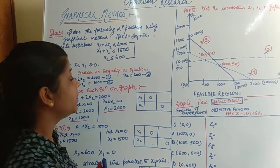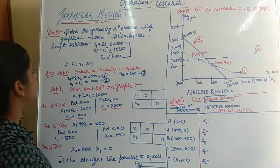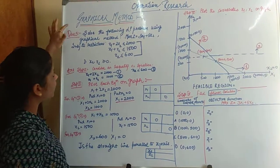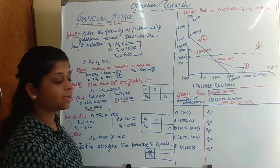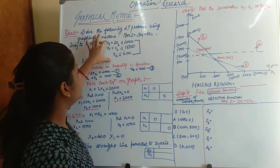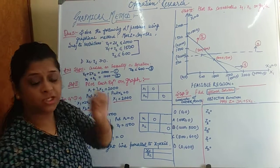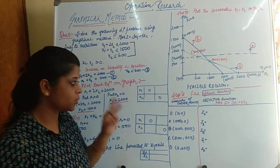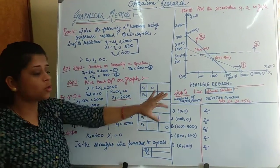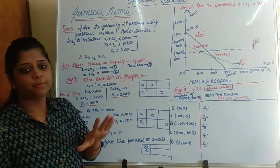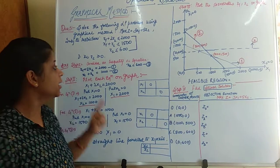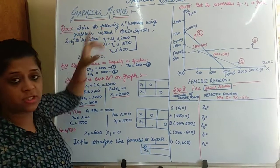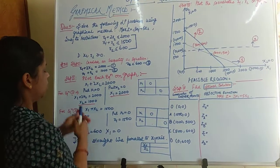In this current video, I am going to explain the graphical method when a maximization problem contains three constraints. In short, five points — the first thing is you have to convert the given constraints into equations.